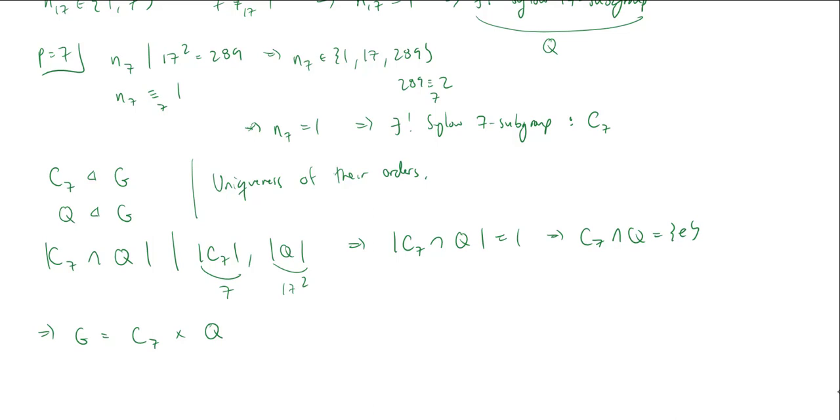Now, what can we say about this Q? Well, Q itself is a group of order 17 squared. 17 is a prime, and of course, we have this little rule, right? If the order of a group is equal to P squared, then the group is abelian. So this tells us that Q is abelian.